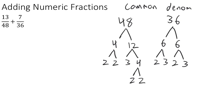So we've determined that 48 is four 2's multiplied by one 3 — in other words, it is 2 to the 4th power times 3. 36, on the other hand, has two 2's multiplied by two 3's, so it is 2 squared times 3 squared.